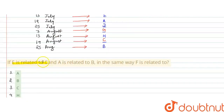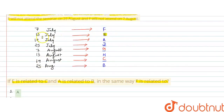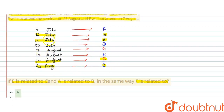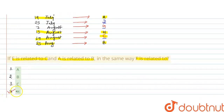If E is related to C and A is related to B, in the same way F is related to whom? E seminar attend kar raha hai 13th July ko, C attend kar raha hai 19th August ko — next date 19 aur next month August. Usi tarah A ka seminar 19th July ko aur B attend kar raha hai 25th August ko — next date 25, next month August. Usi tarah F seminar attend kar raha hai 7th July ko — next date 13 aur month August hona chahiye, to 13th August ko H ka seminar ho raha hai. So option 4, H is the right answer. Hope you like this video, thank you.